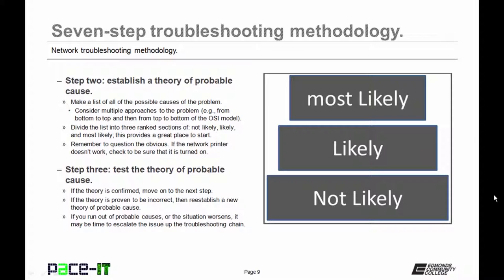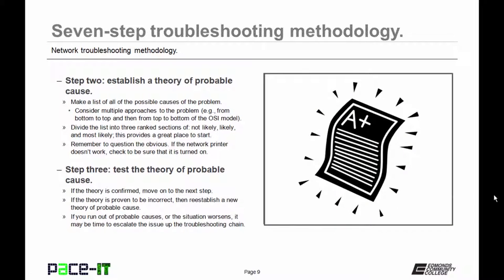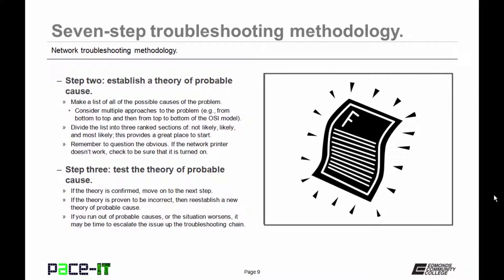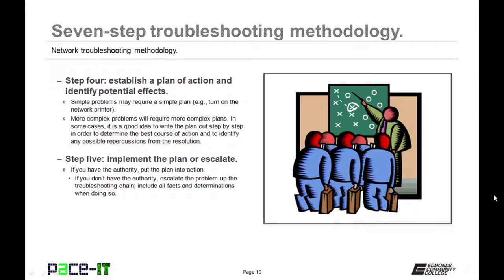When establishing your theory of probable cause, remember to question the obvious. If the network printer doesn't work, check to be sure that it is turned on. The third step is to test the theory of probable cause. If the theory is confirmed, move on to the next step. If the theory is proven to be incorrect, then re-establish a new theory of probable cause. If you run out of probable causes, or the situation worsens, it may be time to escalate the issue up the troubleshooting chain.